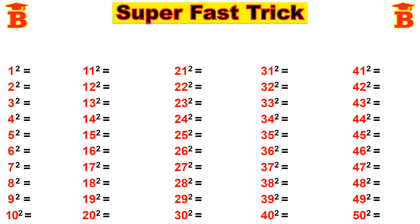Welcome to our channel Bright Mass. In this video we are going to learn the super fast trick to find the square numbers from 1 to 50. First let us find 1 squared to 10 squared.